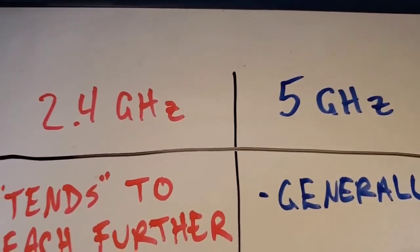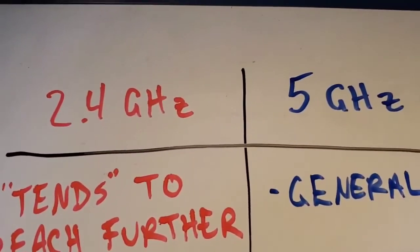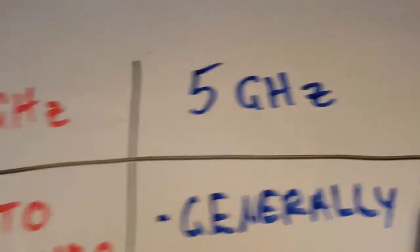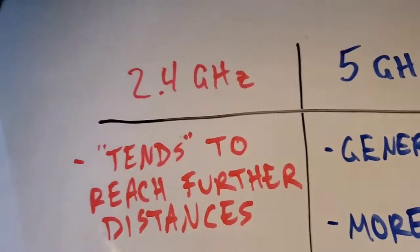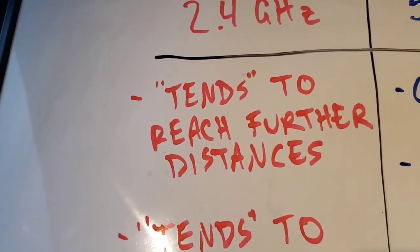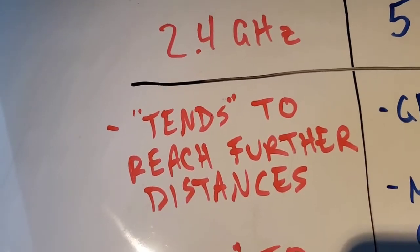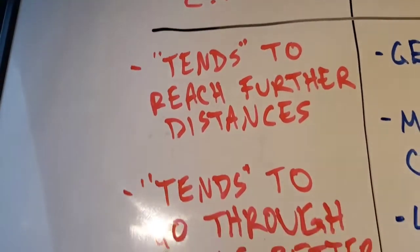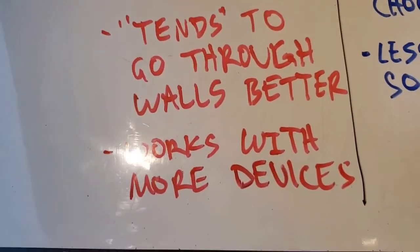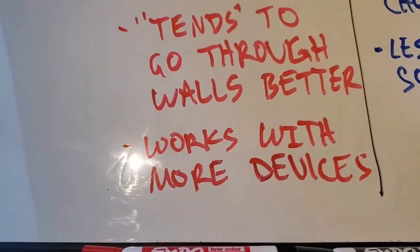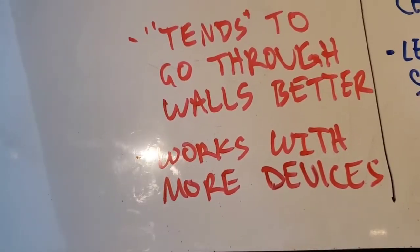So why do we have both, and why would you choose one over the other? Here are a few major points: the 2.4 gigahertz band tends to reach further distances, it tends to go through walls better, it works with more devices, it's used in older routers, and more devices are able to connect to it.